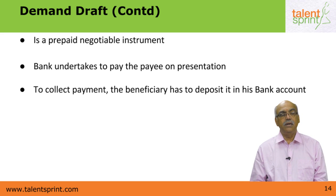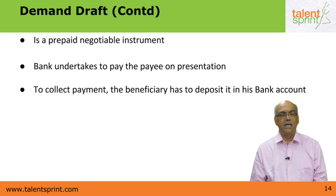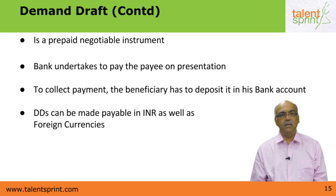To collect the payment, the beneficiary has to deposit the DD in his account. Normally, demand drafts are not allowed to be encashed — cash will not be given to the payee of a demand draft; it has to go through the banking system only. The beneficiary deposits the draft in his bank account, the bank clears it and credits the amount to the depositor's account. A DD can be made payable in Indian rupees or in foreign currency as well.